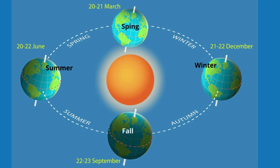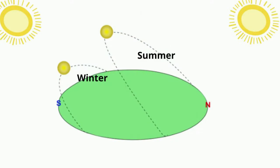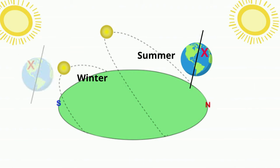During spring and fall, the angle of the Sun is in between the winter and summer angles, which is why the temperature is somewhere between summer and winter. The tilt of the Earth also causes the hemisphere tilted closest to the Sun to have the longest days, and the hemisphere tilted away to have the shortest days, which also impacts temperature.